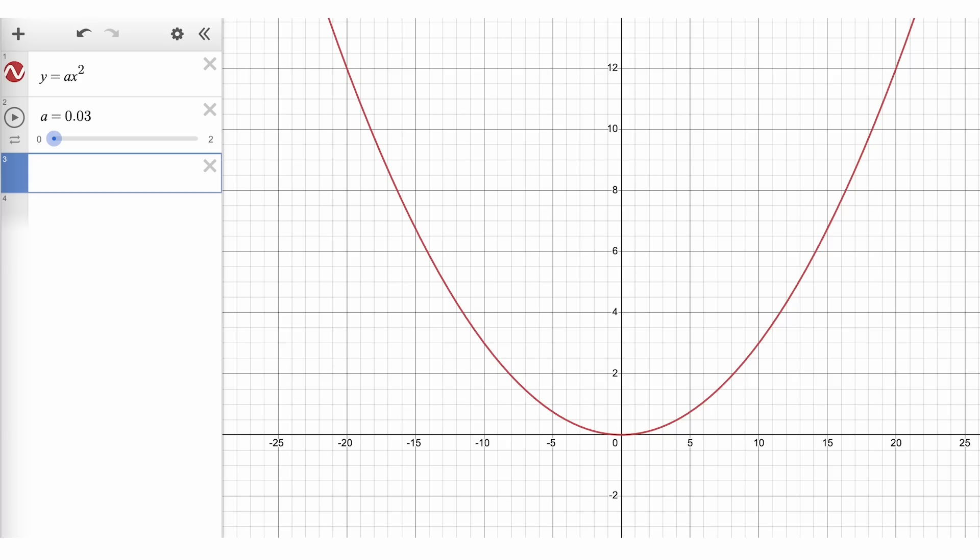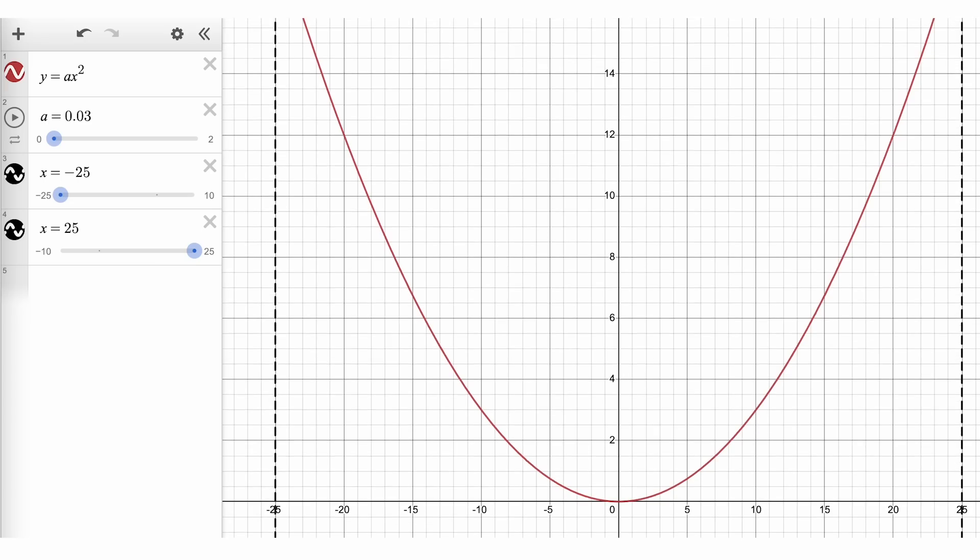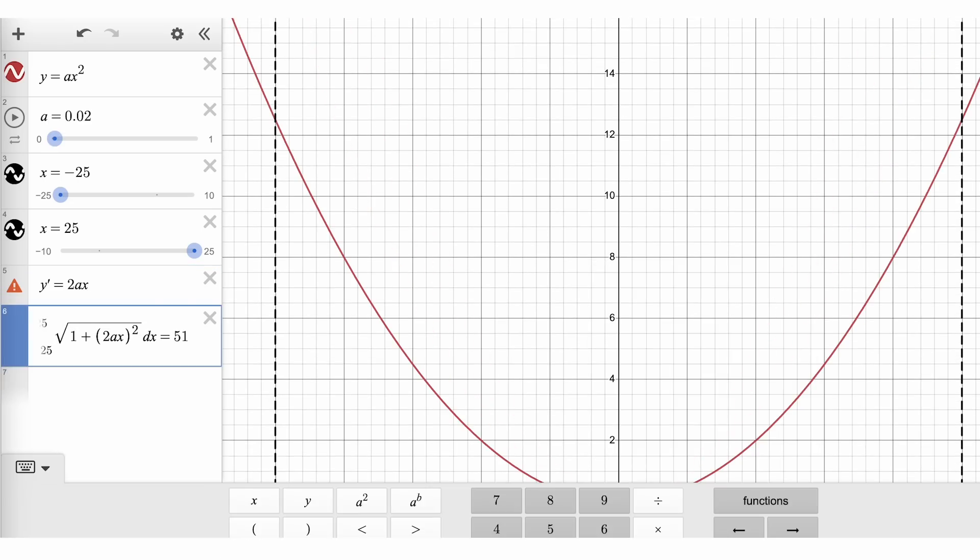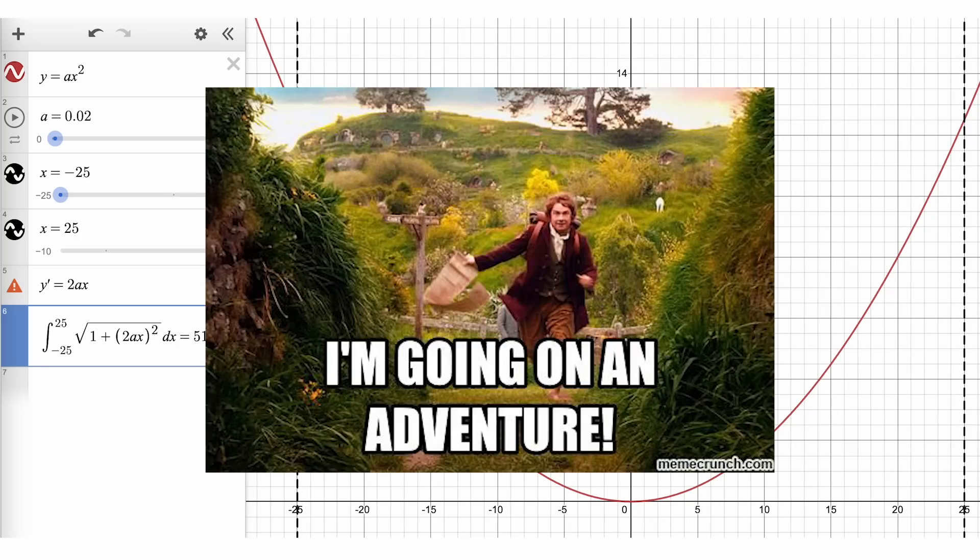Since the vertex of these parabolas are all at the origin, that means that the parabola must stretch from the x-coordinate negative 25 to 25. The arc length of the curve, which we can calculate using an integral, needs to be 51 units.